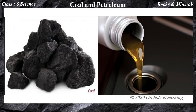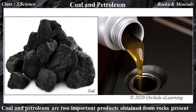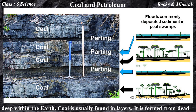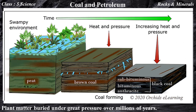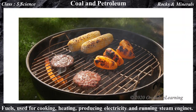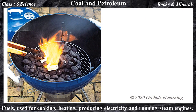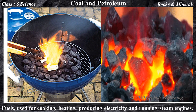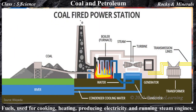Coal and petroleum are two important products obtained from rocks present deep within the earth. Coal is usually found in layers. It is formed from dead plant matter buried under great pressure over millions of years. Coal is extracted from the ground by coal mining. It is one of the most important fuels, used for cooking, heating, producing electricity, and running steam engines.